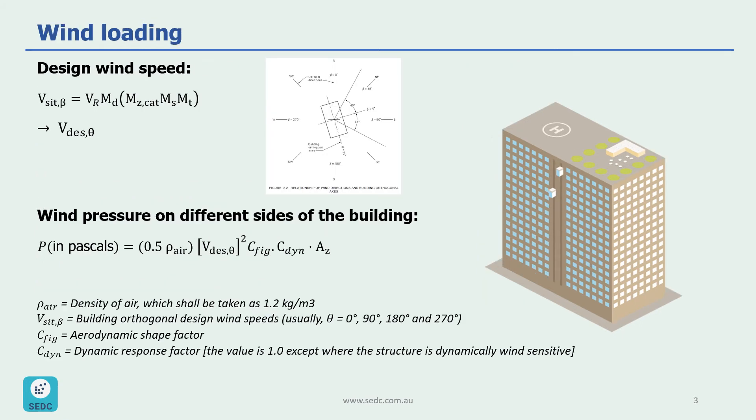Our first step to measure wind actions on this building is to calculate design wind speed or V_design,θ. Theta is shown in this picture in here, which shall be taken as the maximum cardinal direction site wind speed or V_site,β, which is shown in here, linearly interpolated between cardinal points within a sector plus and minus 45 degrees to the orthogonal direction being considered. So this beta is shown here, which is related to the north direction, south, east and west directions.